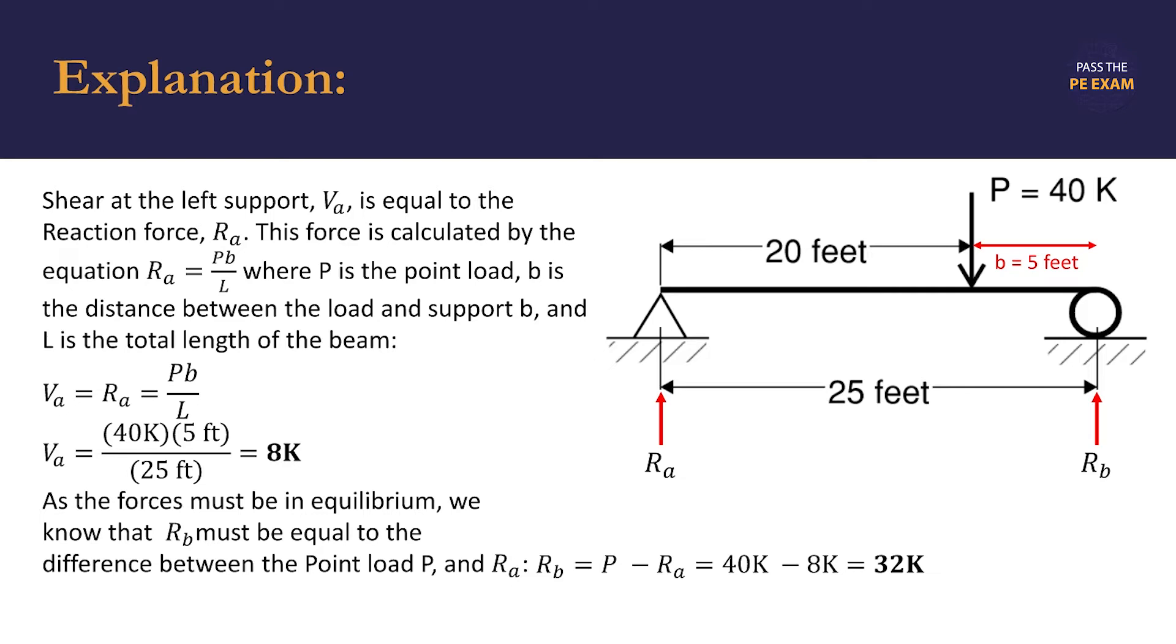Similar to how V_A equals the reaction force at point A, V_B (the shear force at point B) equals the reaction force at point B. So the shear force at support B is 32 kips.